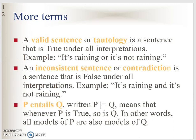Now about whether a sentence is valid or not. A tautology is a sentence that is true under all interpretations. For example, 'it is raining OR it is not raining' is always true because at any point in time it is either raining or not raining. An inconsistent sentence has a contradiction and is false under all interpretations — for example, 'it is raining AND it is not raining' does not make sense and is false in every condition.